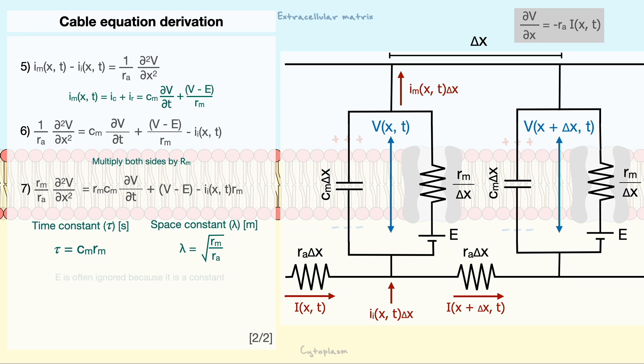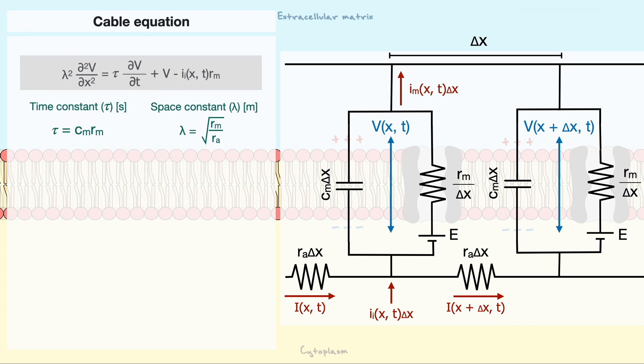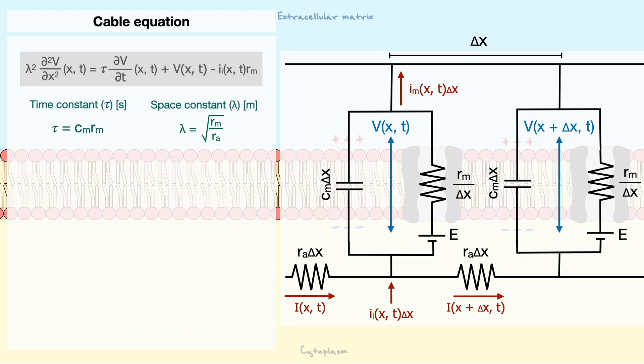Another quick note, since E is a constant and can be essentially treated as an offset, you will often see this equation without the E in order to make it simpler. In all, the equation that governs how the membrane potential changes as a function of time and space in our model cylinder is this very complicated second order partial differential equation.